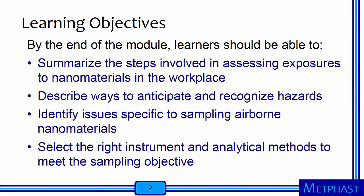By the end of this module, learners should be able to summarize the steps involved in assessing workplace exposures to nanomaterials, describe ways to anticipate and recognize hazards, identify important issues specific to sampling nanomaterials, and select the right instrument and analytical methods to meet the sampling objective.